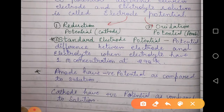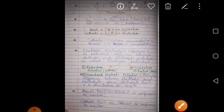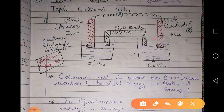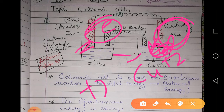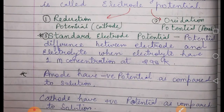We always remember: the anode has a negative potential compared to the solution, and the cathode has a positive potential compared to the solution. This is because cations — positive charges — accumulate at the cathode, giving it a more positive potential, while electrons — negative charges — accumulate at the anode, giving it a more negative potential.